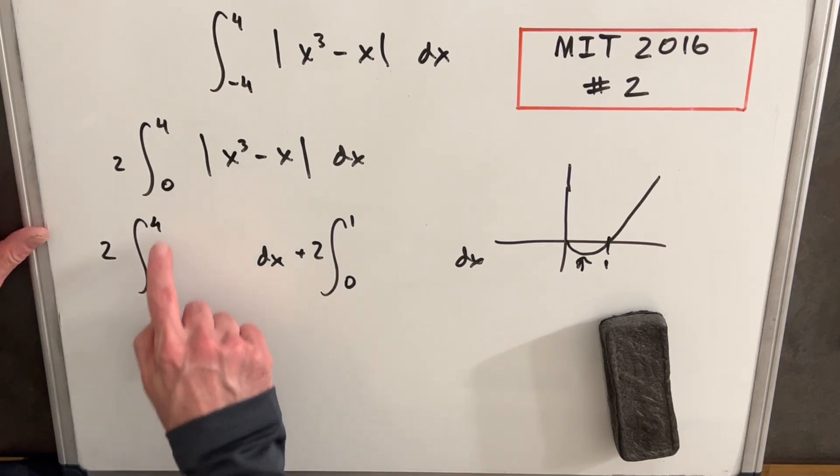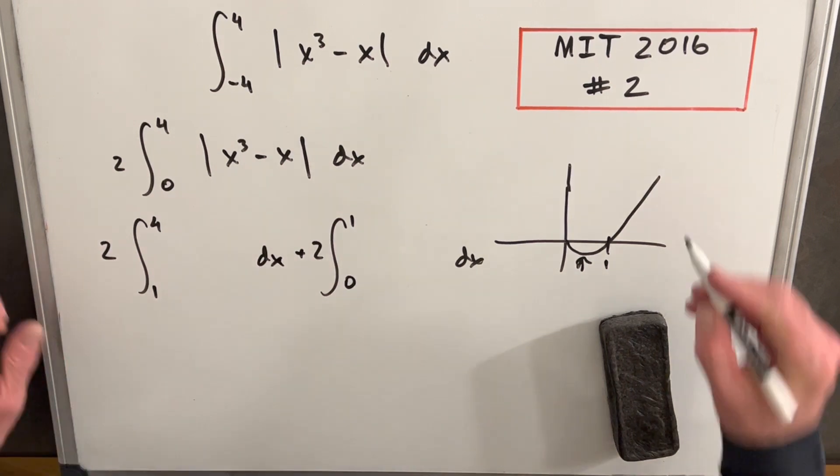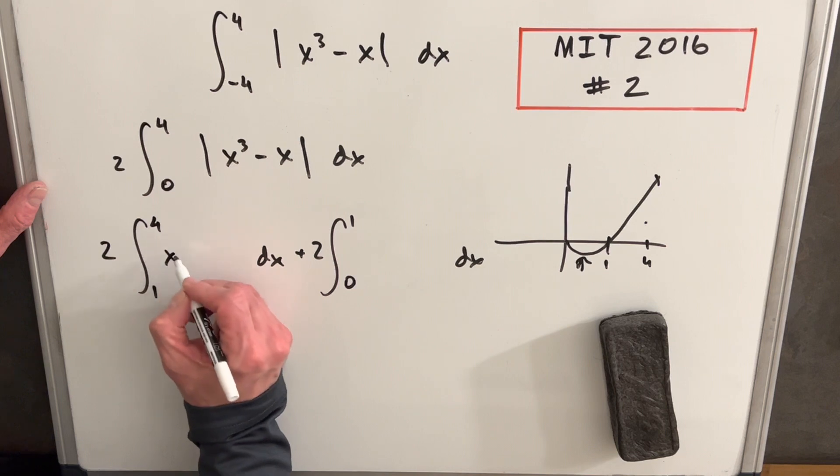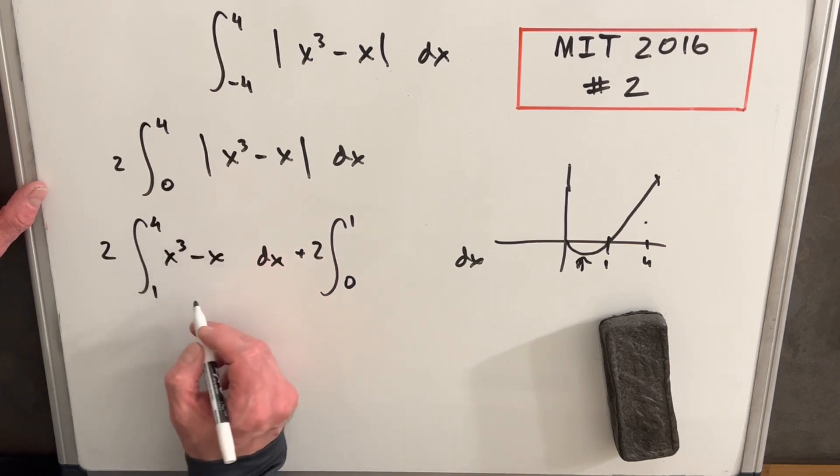So between one and four, we could do like four right here. All these values are positive, so we can just drop the absolute value sign. And now we got an easy integral here that we know how to handle.